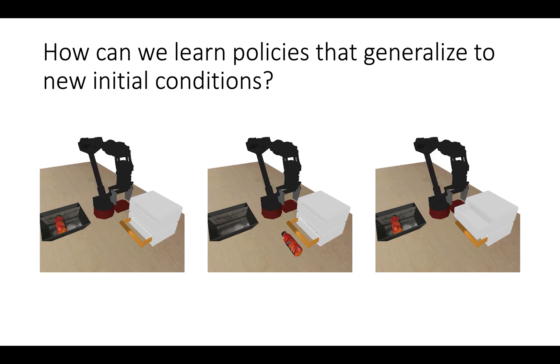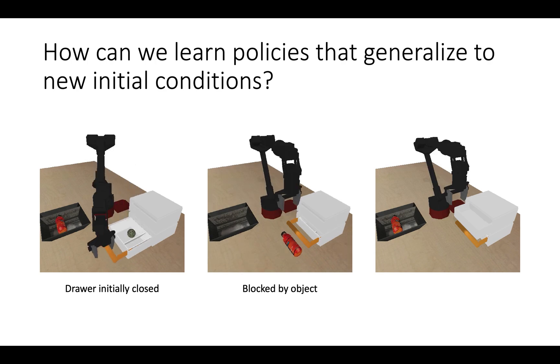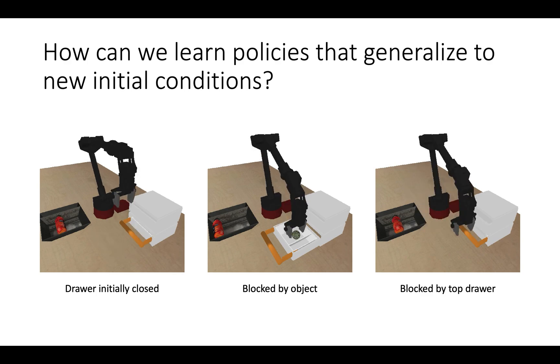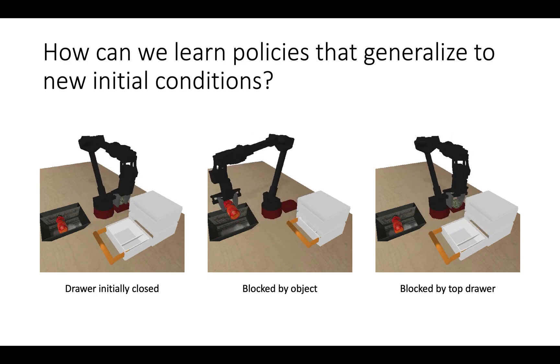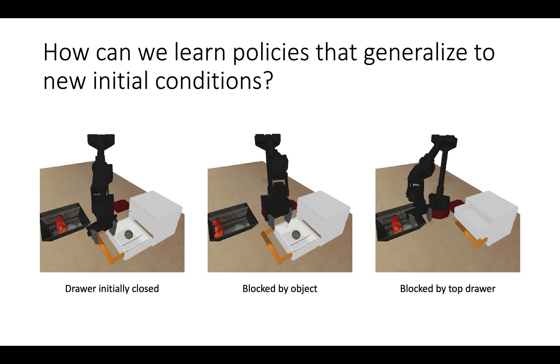How can we learn policies using reinforcement learning that can generalize to new initial conditions? In our example, a simple new condition might consist of a closed drawer, while more complicated new conditions in which the drawer is blocked by an object or by another drawer are also possible. We would like to enable our learned policy to execute the task from as many different initial conditions as possible.